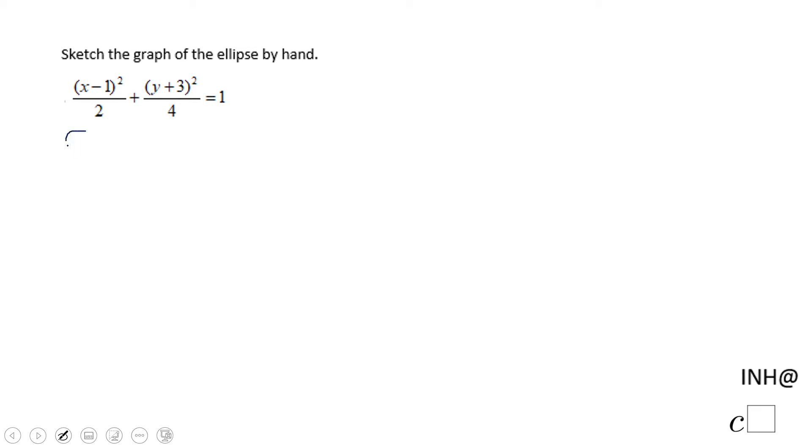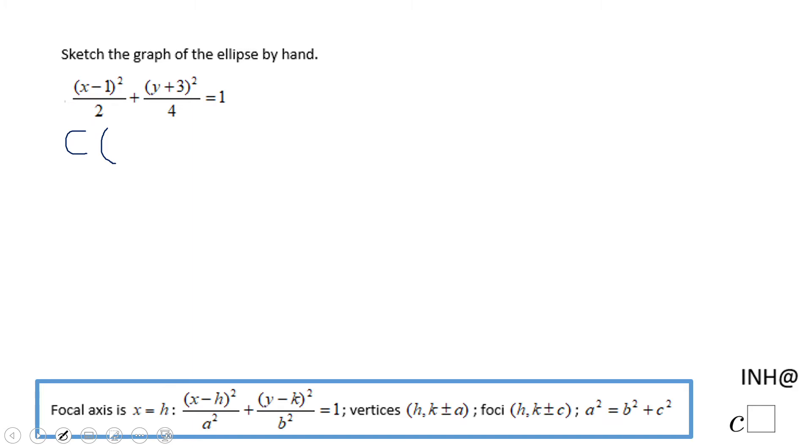So the first thing you want to do when you have something like that is to find the center. The center in this case, if you look here to this equation I put down on the screen, will be x minus h, so it's going to be 1 here because h is 1, and y minus k, so that will be negative 3. So let's do that first.